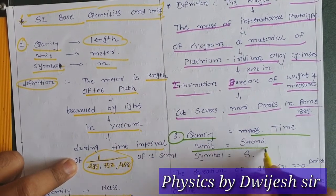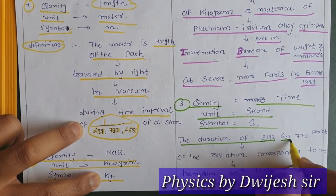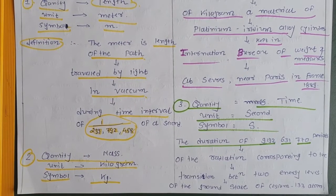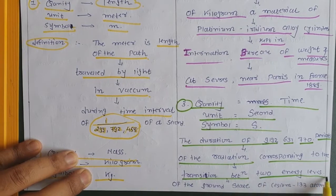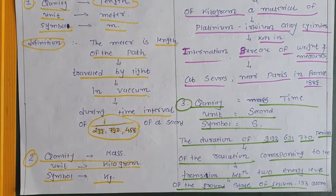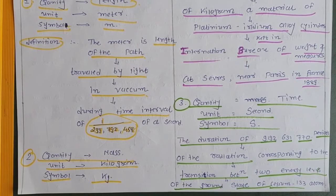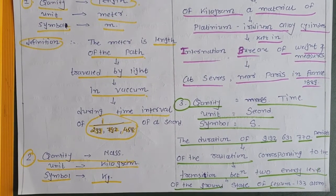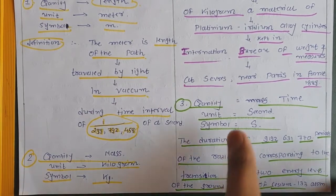The third base quantity is time. The unit is second and the symbol is 's'. The definition: one second is the duration of 9,192,631,770 periods of the radiation corresponding to the transition between two energy levels of the ground state of the cesium-133 atom. The transition duration of 9,192,631,770 periods of vibration is known as one second.